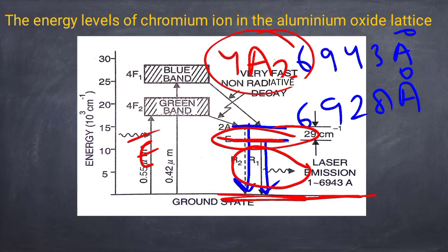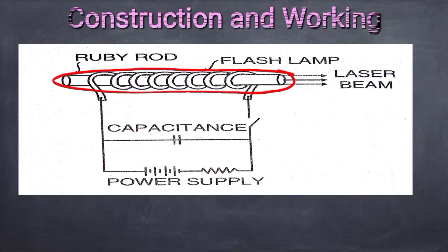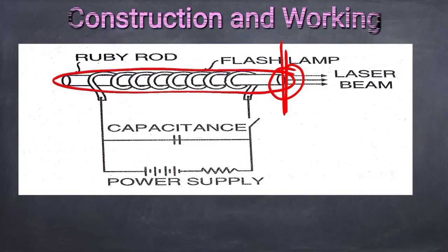The ruby laser consists of a single ruby crystal in the form of a cylindrical rod, about 5 cm in length and 0.5 cm in diameter, with end surfaces accurately plane and parallel. One end is silvered with 100% reflectivity and the other with 10% transmission, so the two ends form a resonant cavity.